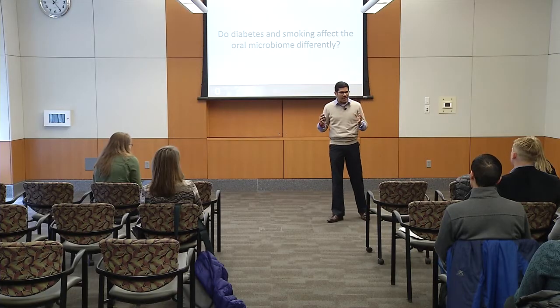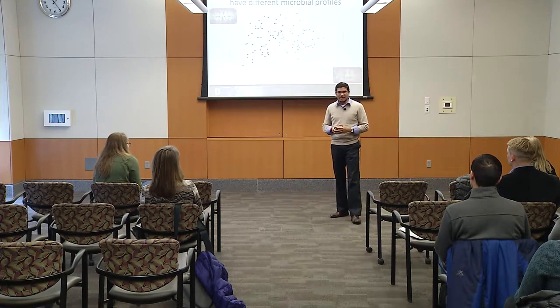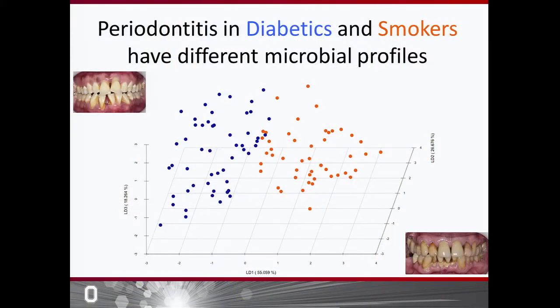So now we know that diabetes and smoking both increase the risk for gum disease. How do they act on the oral ecosystem? Using linear discriminant analysis — the same graph here — on the top you have the patient with diabetes, on the bottom the patient who smokes, and orange dots represent the smokers. There is a clear separation between a diabetic and a smoker based on their microbial profile, even though they both have gum disease with a similar clinical presentation.